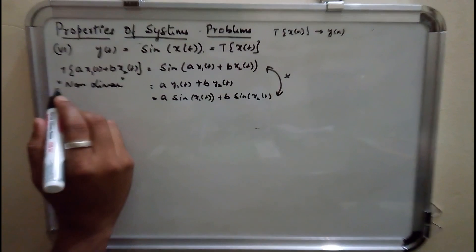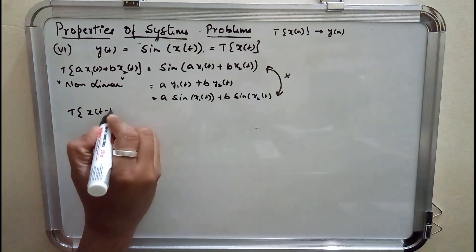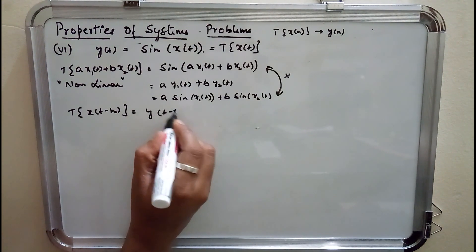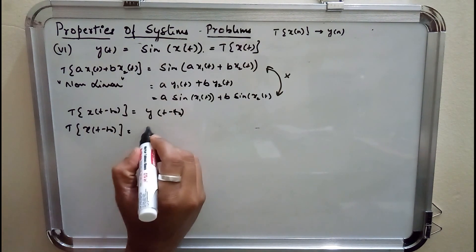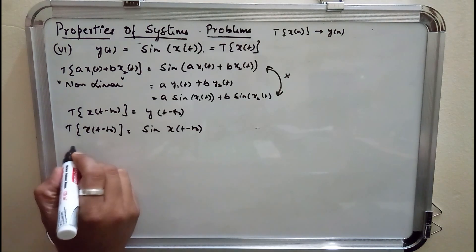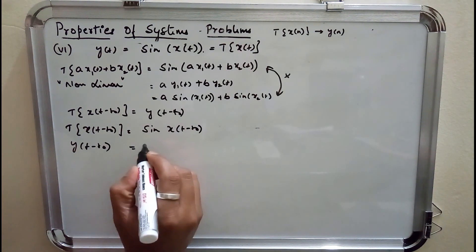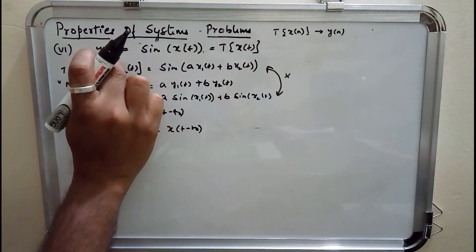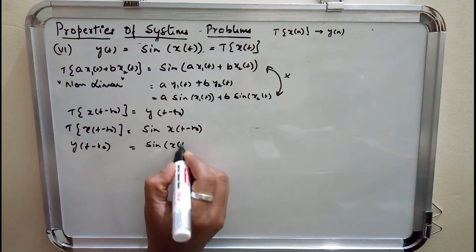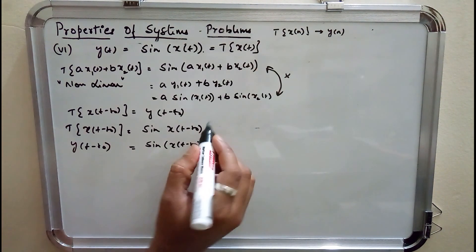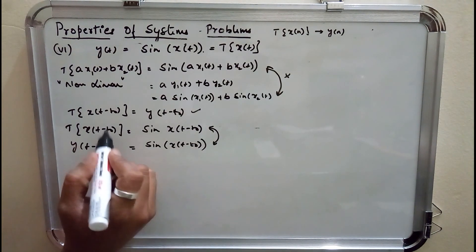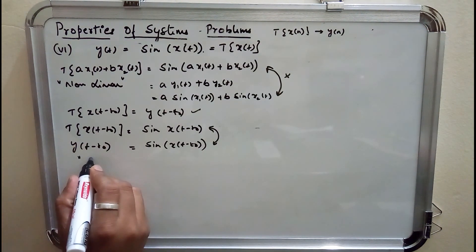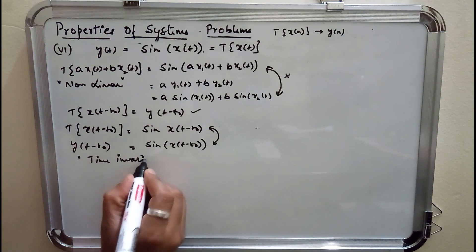Coming to time invariance: if there is a shift in the input by t₀, there should be a corresponding shift in the output. Shifting the input: transformation on x(t − t₀) gives sgn(x(t − t₀)). On the right-hand side, y(t − t₀) means replacing t by t − t₀, giving sgn(x(t − t₀)). These two are equal — left-hand side equals right-hand side — so the system is time invariant.